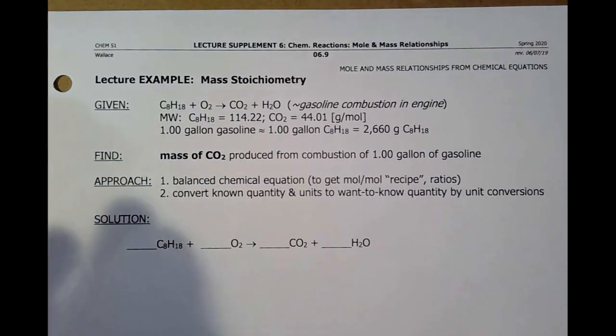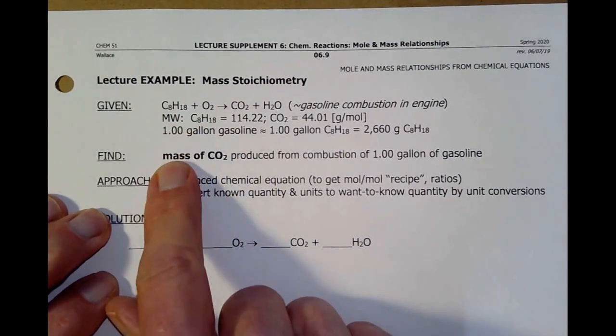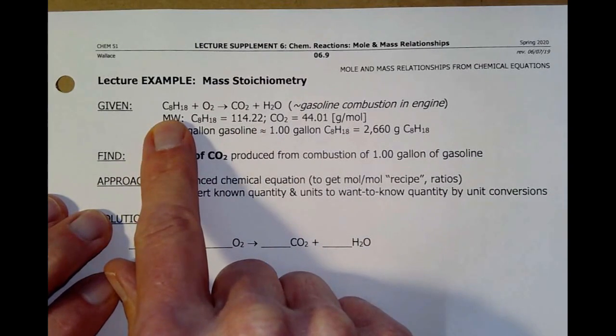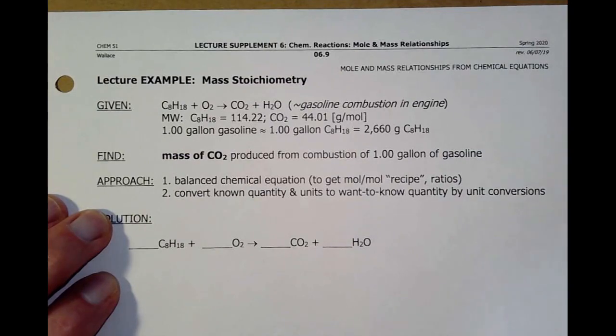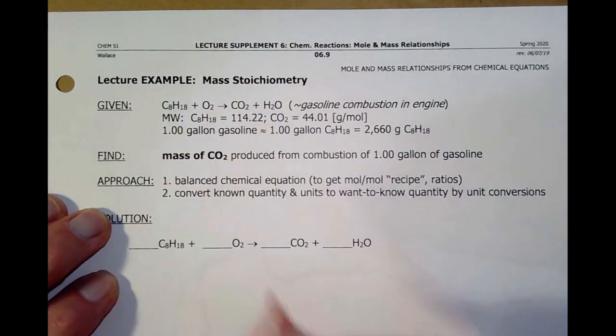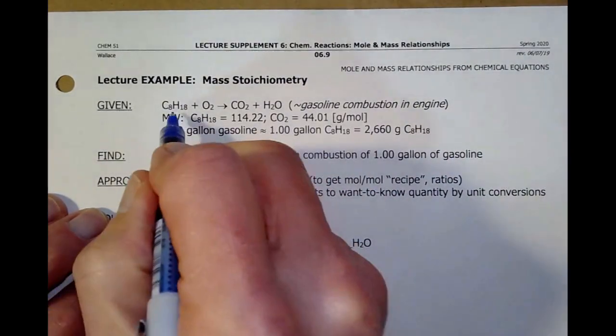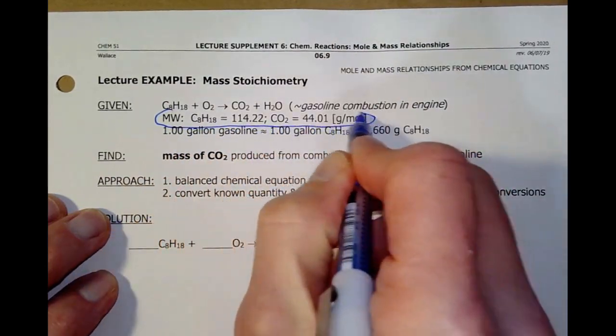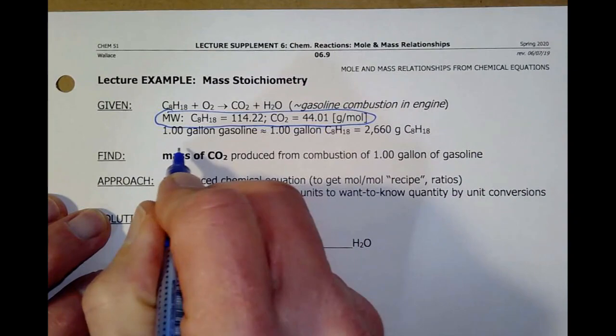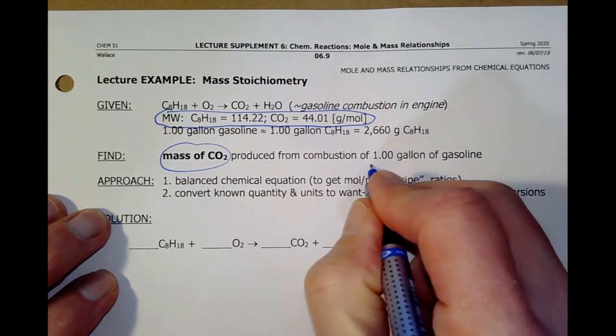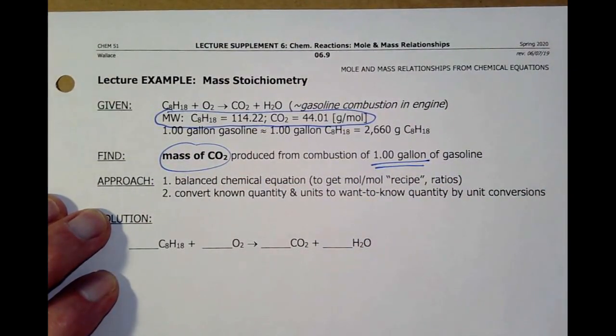So I have this reaction up here, octane basically, C8H18, reacting with oxygen, gives me CO2 and water. I give you the molar masses, or the molecular weights, just to save time. And it says, I want to know how much CO2 is produced from the combustion of one gallon of gasoline.